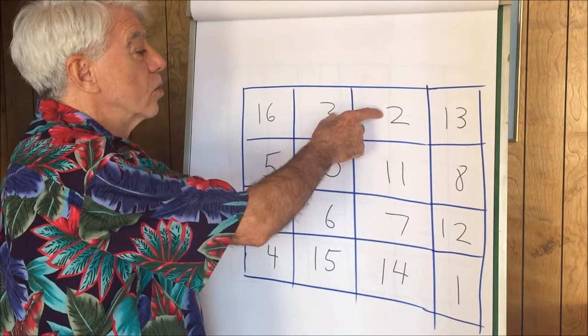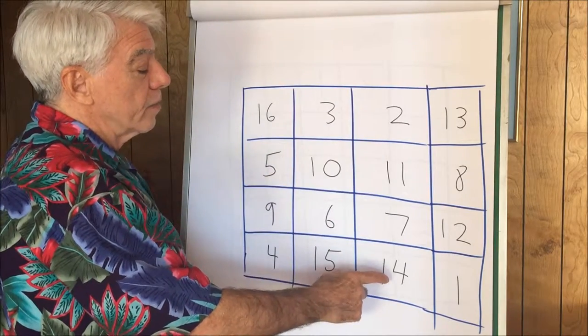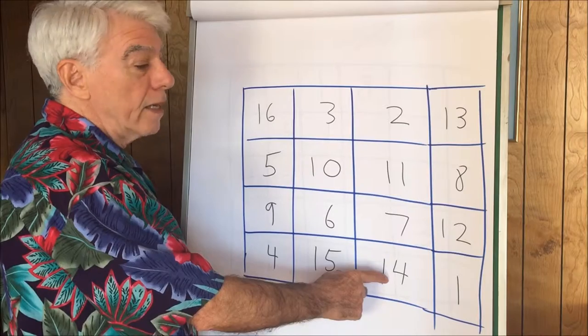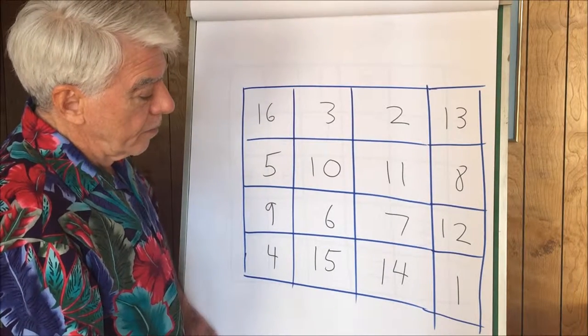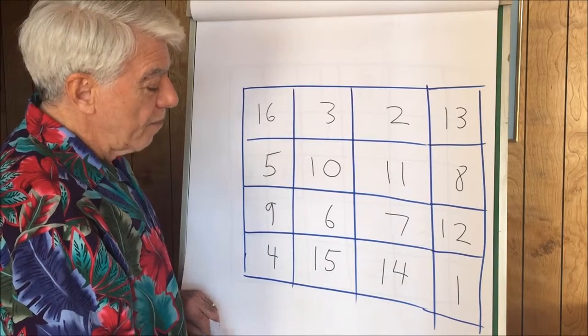We could take these two, 5, and add them to 29, 34. Let's take a look now at the 5 by 5 magic square.